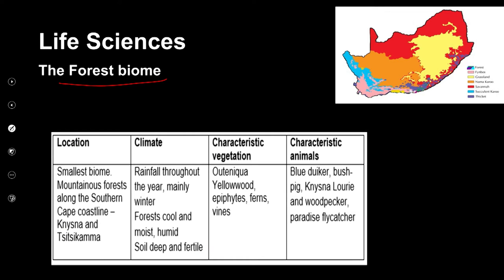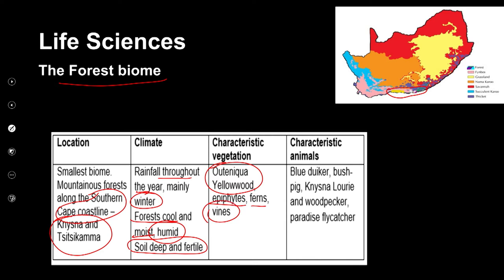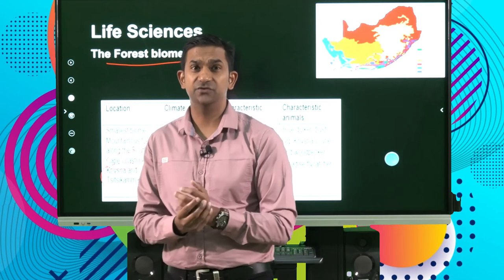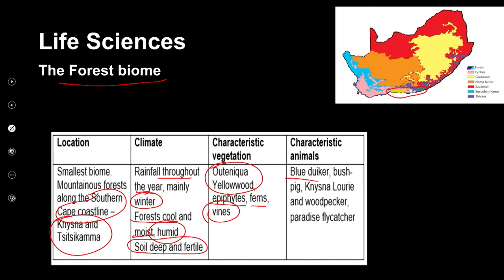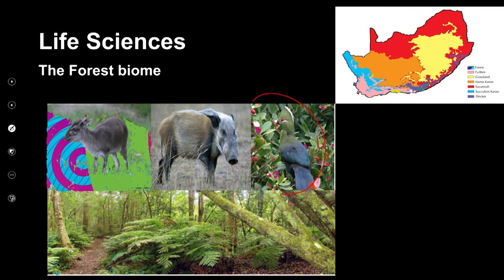The forest biomes are indicated in green on the map, found in little areas around the Cape coastline, along the southern coast, as well as Knysna and Tsitsikamma. They have rainfall throughout the year, mainly winter. The forests are cool, moist, and often very humid, with deep and fertile soil. Plants found here include the Outeniqua yellowwood trees, epiphytes, ferns, and vines. Animals include the blue duiker, bushpig, Knysna loerie, woodpeckers, and paradise flycatcher.